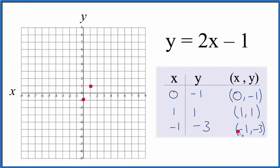And finally we have minus 1 and minus 3. So we go over 1 and then 1, 2, 3 down, and that's the line. We can put a line right through that. Put some arrows on the end to show that it goes to infinity.